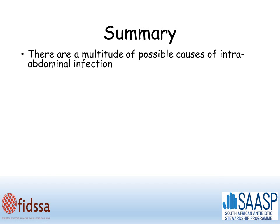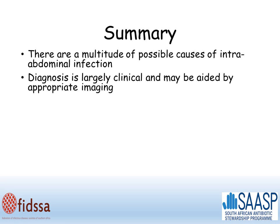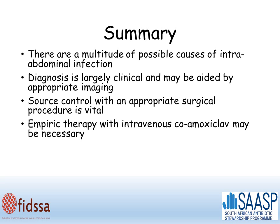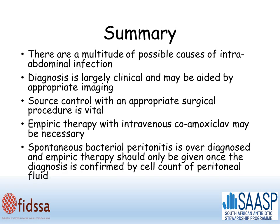In summary, there are a multitude of possible causes of intra-abdominal infection. Diagnosis is largely clinical and may be aided with appropriate imaging. Source control with an appropriate surgical procedure is vital. Empiric therapy with co-amoxiclav may be necessary. Spontaneous bacterial peritonitis is overdiagnosed, and empiric therapy should only be given once the diagnosis is confirmed by cell count of peritoneal fluid.